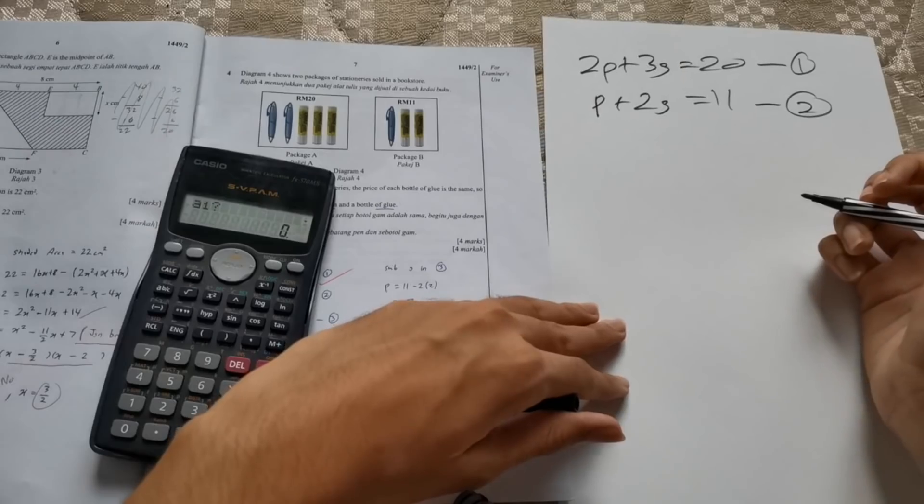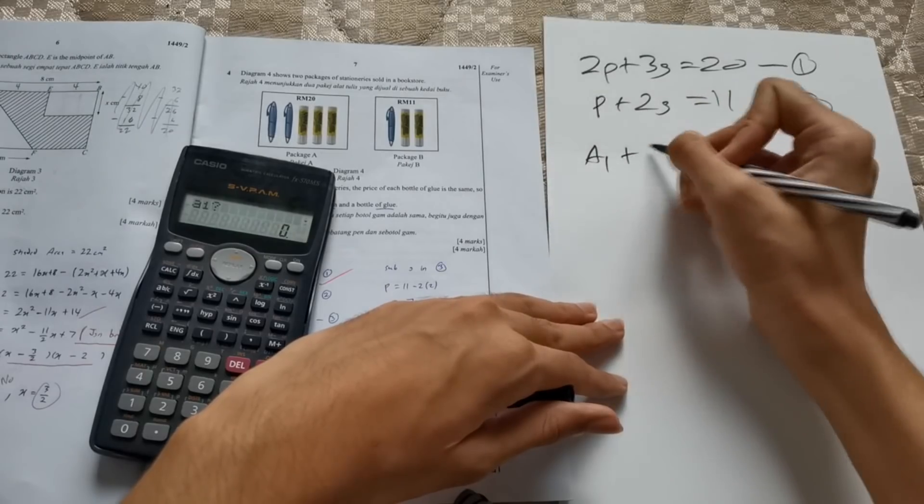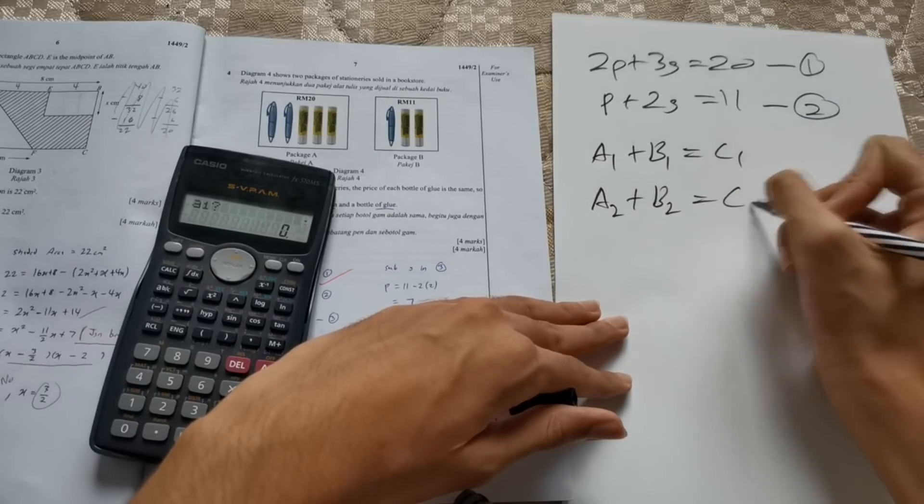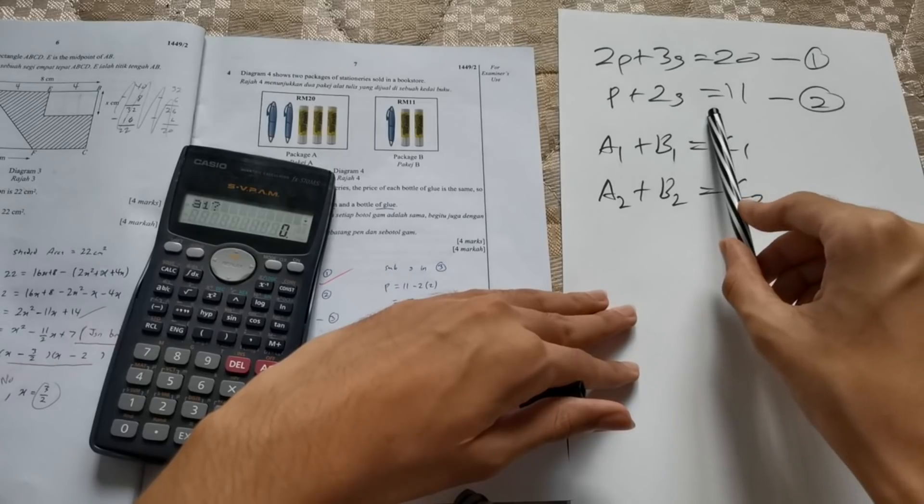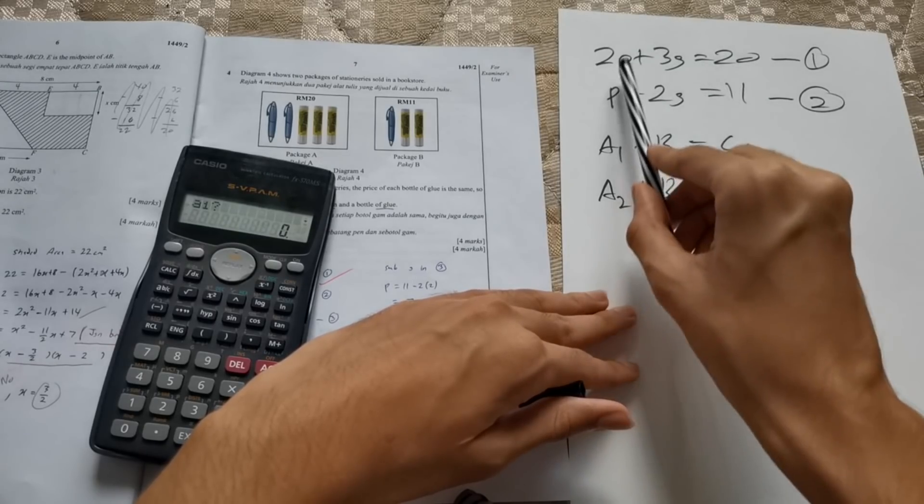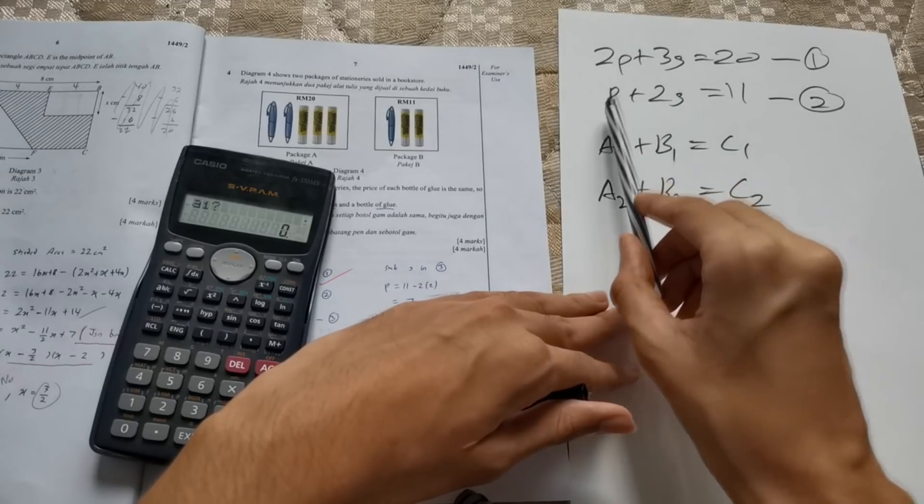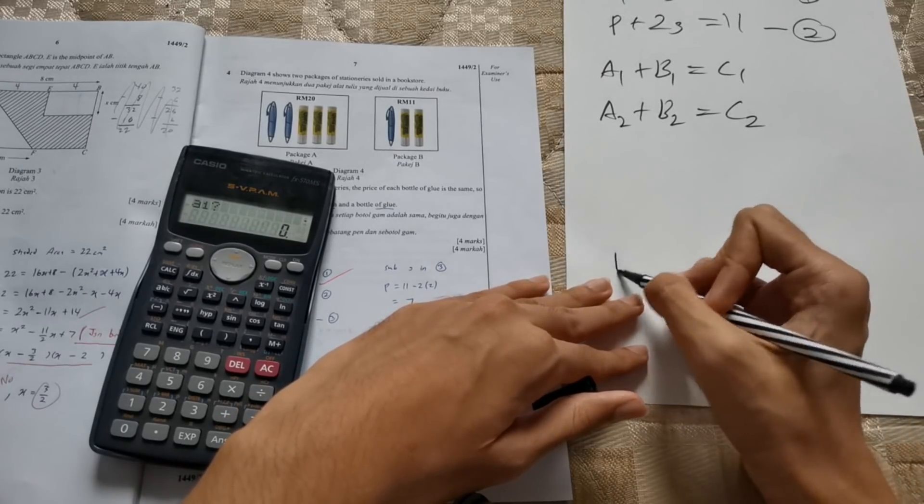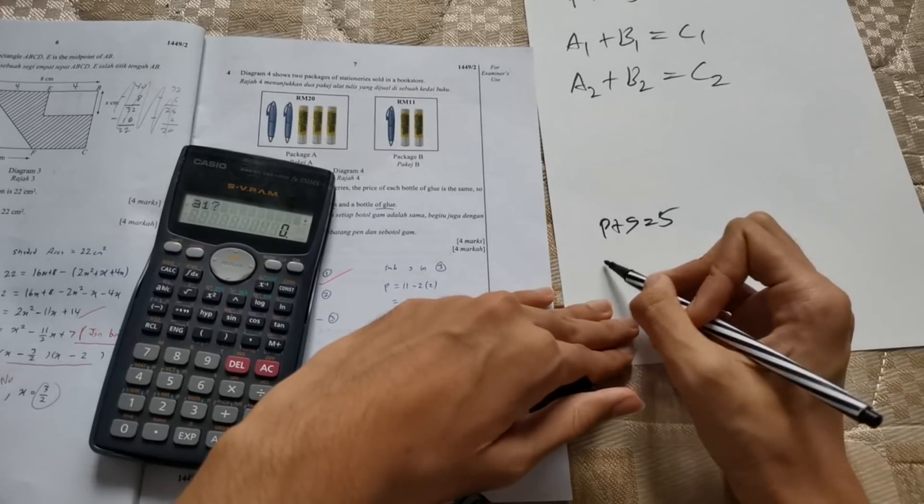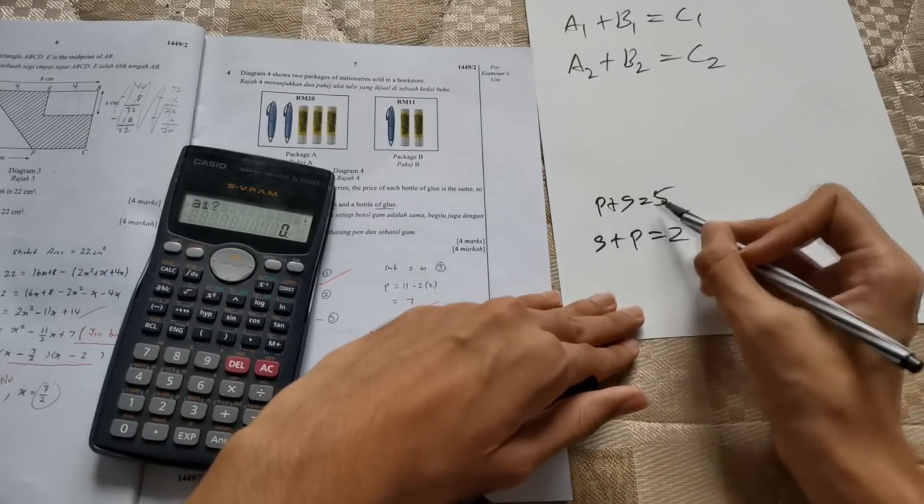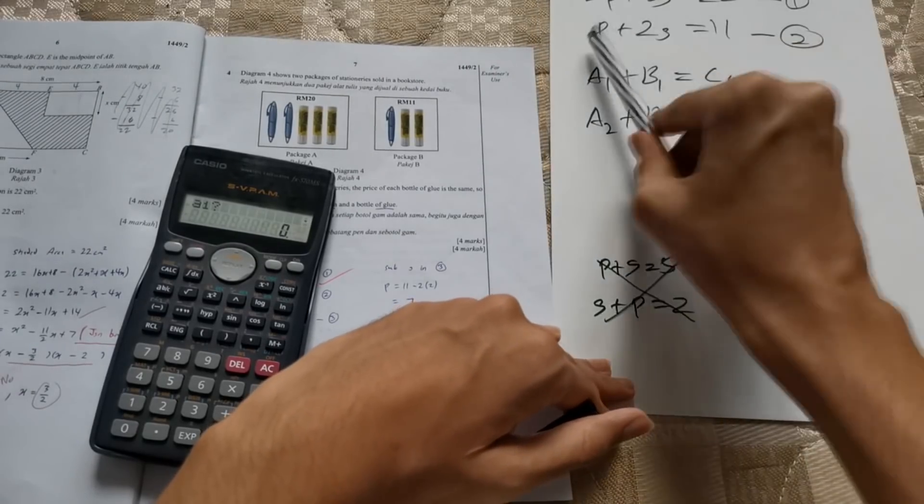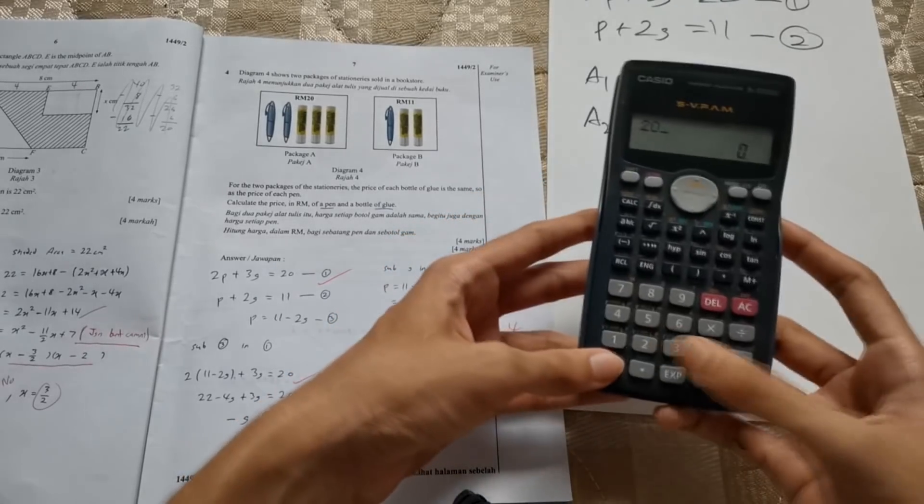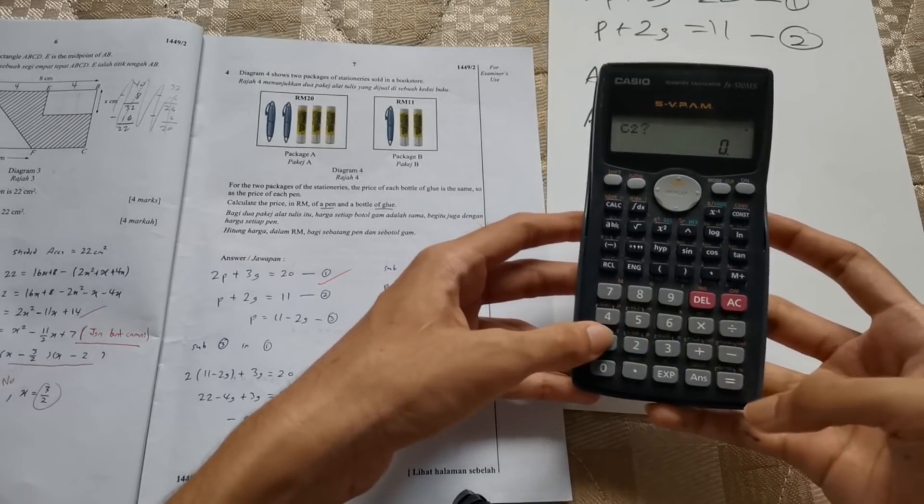All you have to do is press mode three times on your calculator and press 1 to choose equation. And then in unknowns, you choose 2. So the way the calculator thinks is A1 plus B1 equals to C1. And A2 plus B2 equals to C2. So you need to compare this in this form. And remember the position of your unknowns. So now all you have to do is press 2 equals to 3 equals to 20 equals to 1 equals to 2 equals to 11.